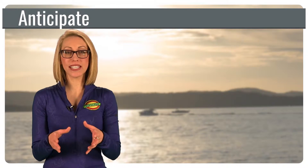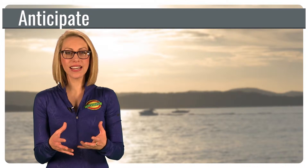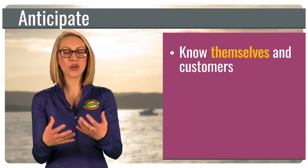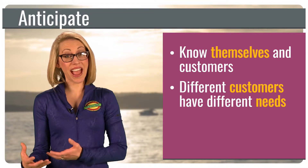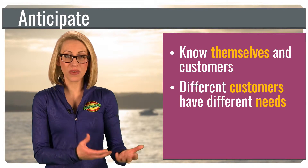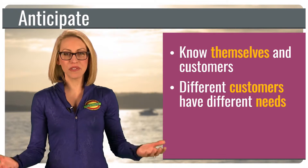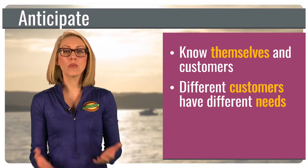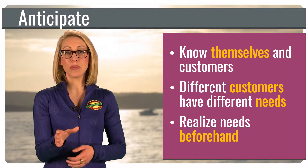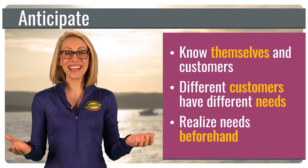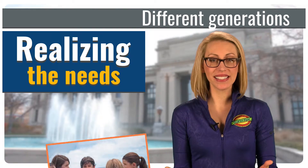When we look at service organizations that excel, what makes them excellent is that they know themselves and their customers very well. They know what different types of customers they have and the different needs of each of those types. The same goes for good caring people — they know what types of friends and neighbors they have and what matters most to them. When you realize the needs beforehand, it's actually easy to anticipate the questions. So let's start there: realizing the needs.